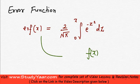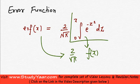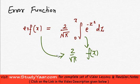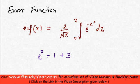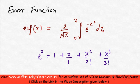So your error function is equal to 2 upon root pi, times that function of x that you get after solving this. Let's try to find out the value of this error function for a given x. We know that e raised to power x is 1 plus x upon 1 factorial plus x squared upon 2 factorial plus x cubed upon 3 factorial and so on.